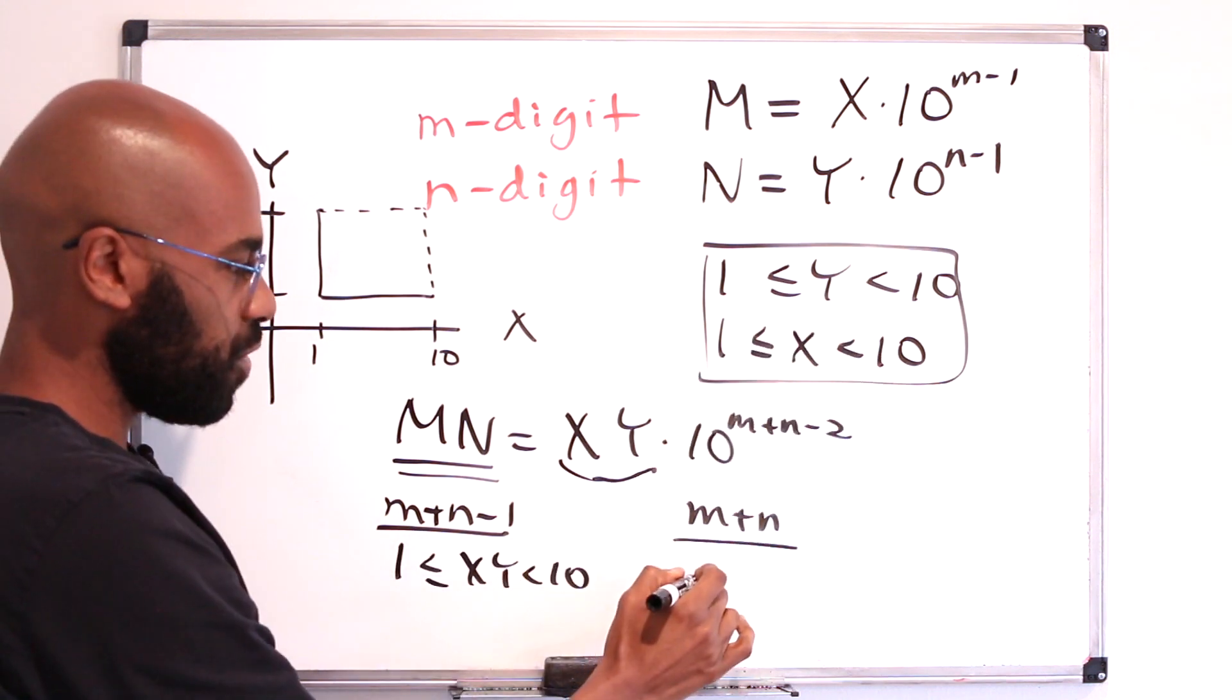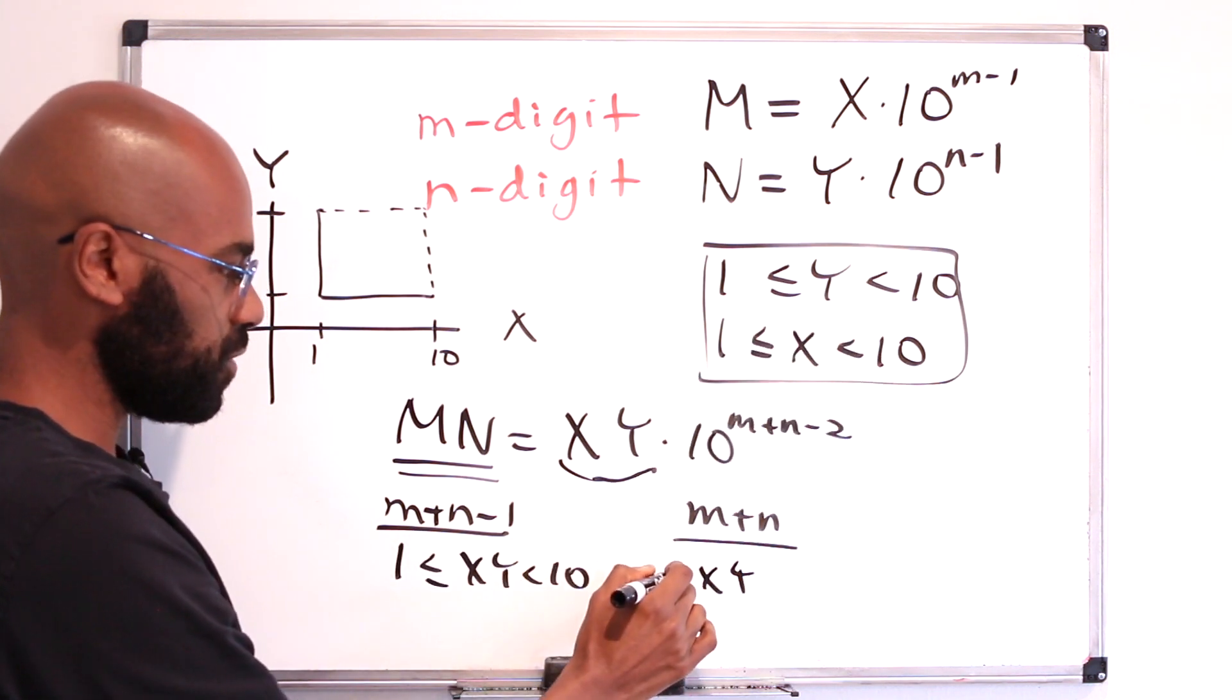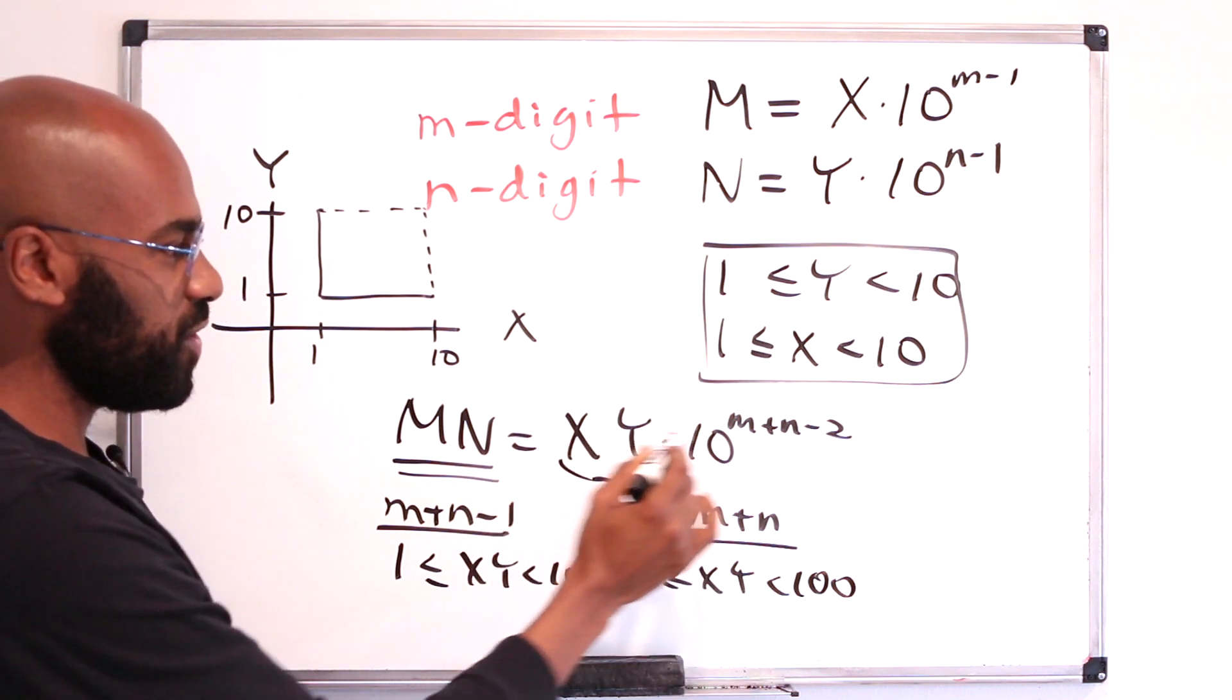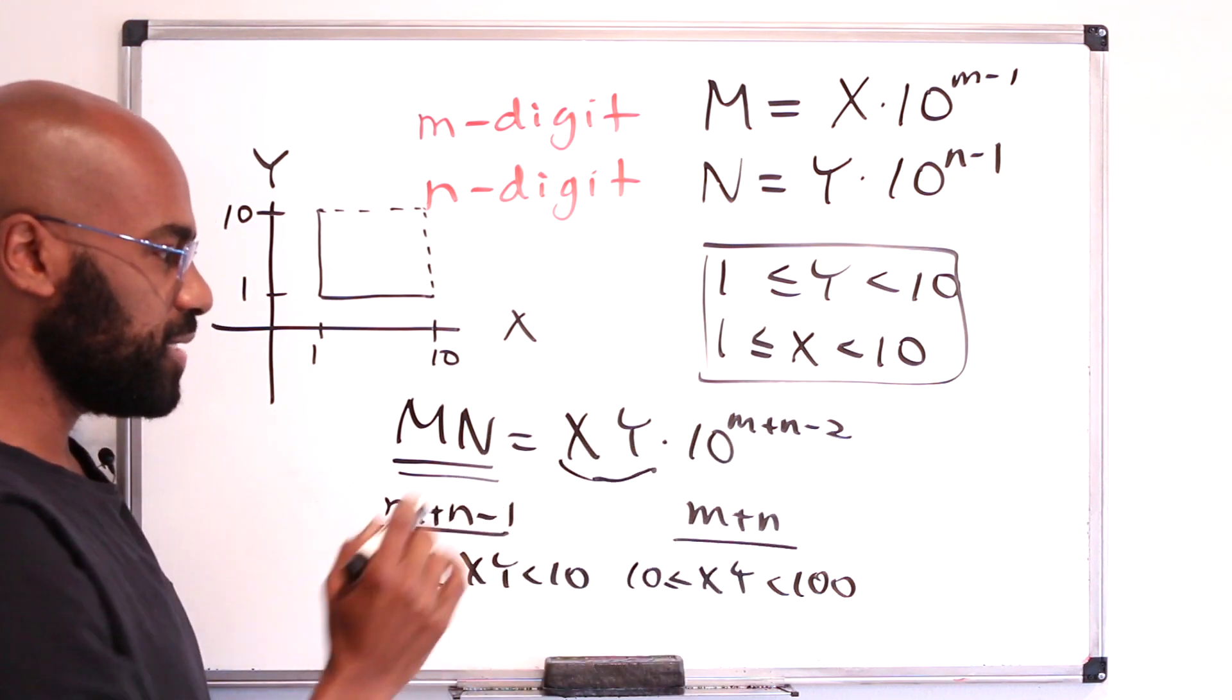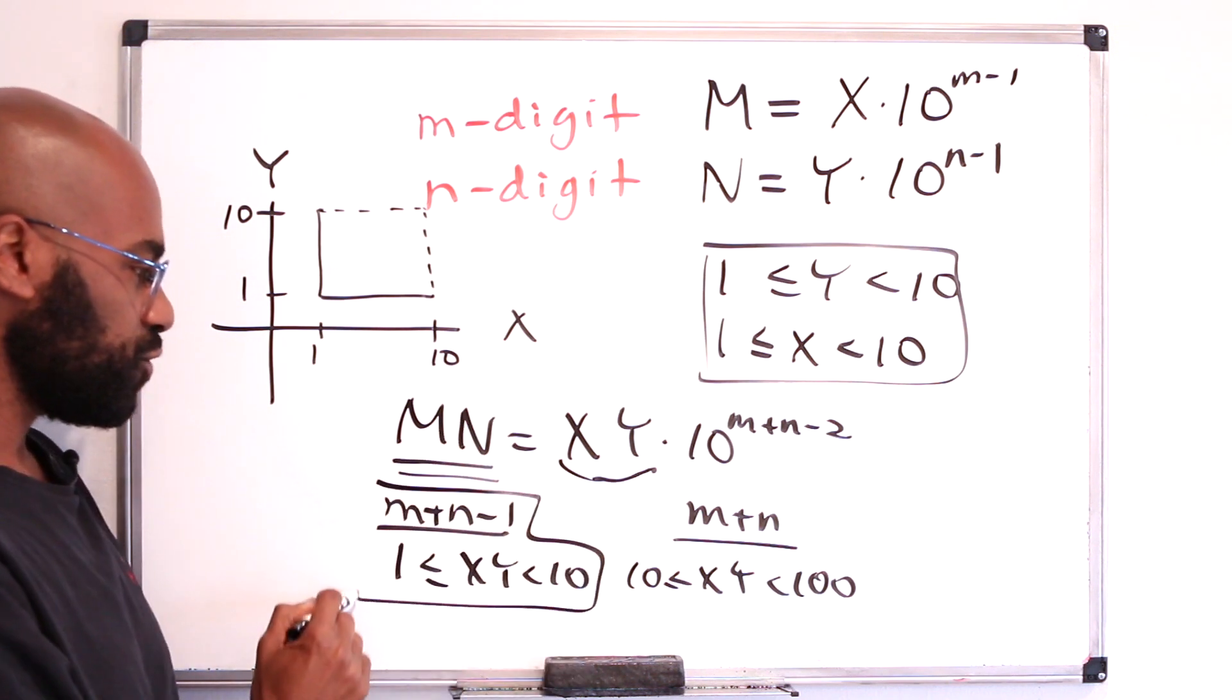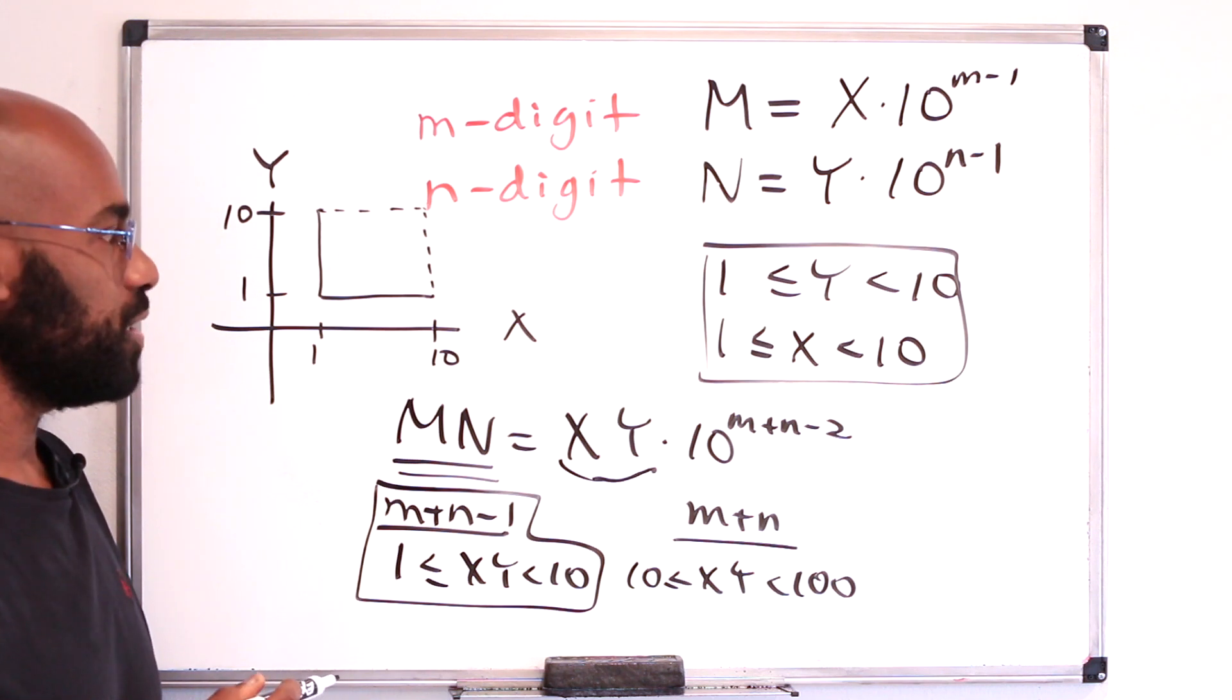Whereas, if it goes up to 100, which is possible, then this is a two digit number, and so this product is going to be an m plus n digit number.